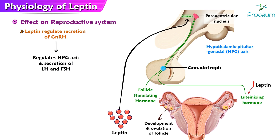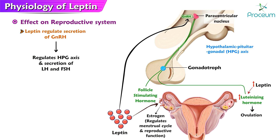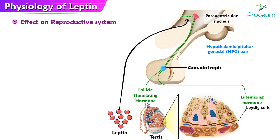High levels of leptin have been linked to increased luteinizing hormone secretion, which can lead to the stimulation of ovulation. Leptin also has a direct effect on the ovaries and has been shown to regulate the production of estrogens, which play a key role in regulating the menstrual cycle and reproductive function.